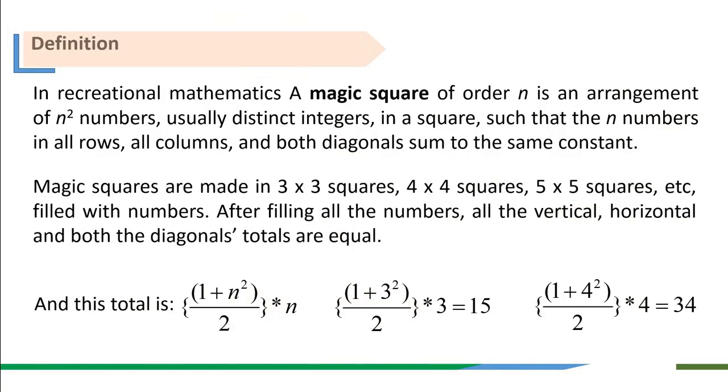A magic square of order n is an arrangement of n² numbers, usually distinct integers in a square, such that the n numbers in all rows, all columns and both diagonals sum to the same constant. While magic squares of order 2 cannot be constructed, magic squares are made in 3×3 squares, 4×4 squares, 5×5 squares or more orders filled with numbers. After filling all the numbers, all the vertical, horizontal and both the diagonals totals are equal.